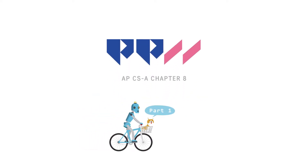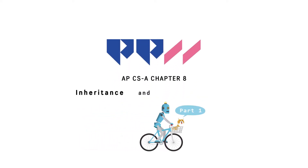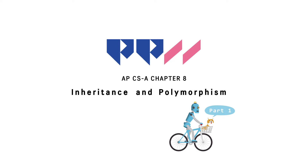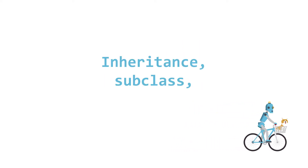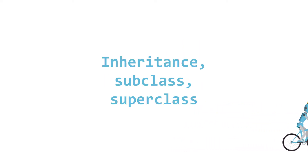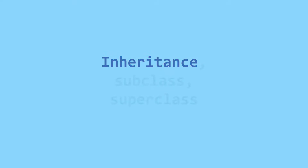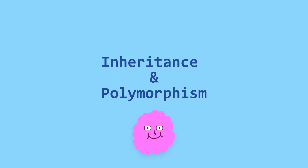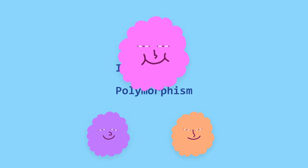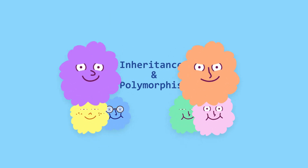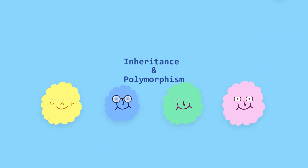Chapter 8, Part 1: Inheritance and Polymorphism. Subclass. Superclass. Inheritance and polymorphism are important concepts of object-oriented programming that create hierarchical relationships among classes.